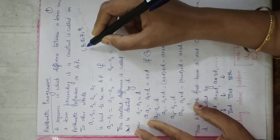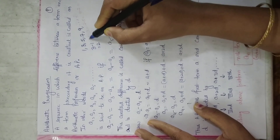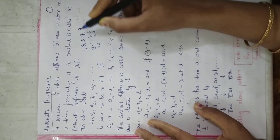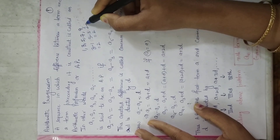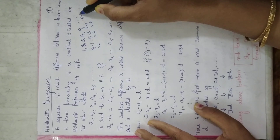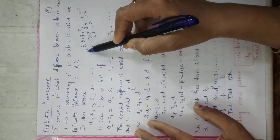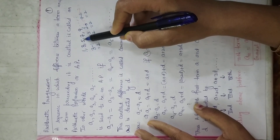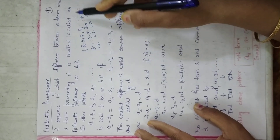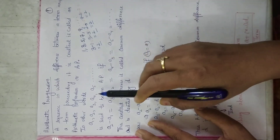Why? Because 3 minus 1 is 2. 5 minus 3 is also 2. 7 minus 5 is 2. 9 minus 7 is also 2. So the difference between a term and its preceding term is always constant, and that constant is equal to 2. So this is an AP.